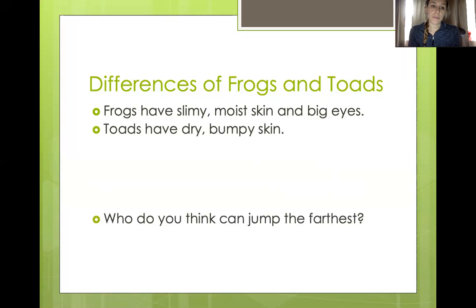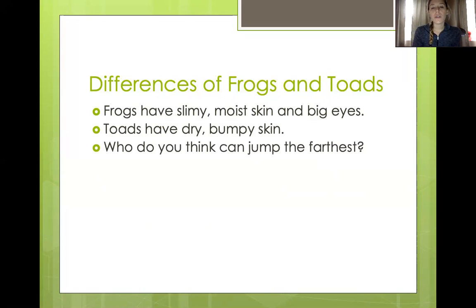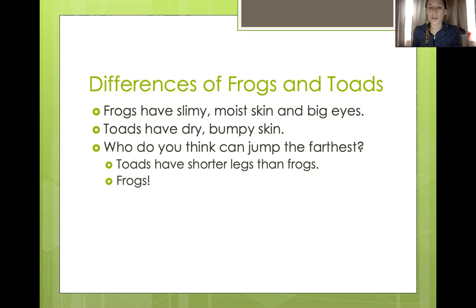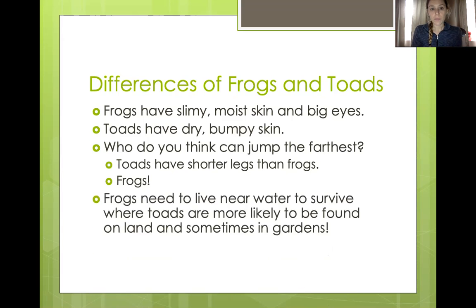Toads have dry, bumpy skin. So who do you think could jump the furthest? Think about the parts of a frog that we discussed. Toads have shorter legs than frogs — frogs is the answer. Frogs' legs are longer in the back and they use them more for jumping, while toads kind of walk around and don't jump as much as frogs do.